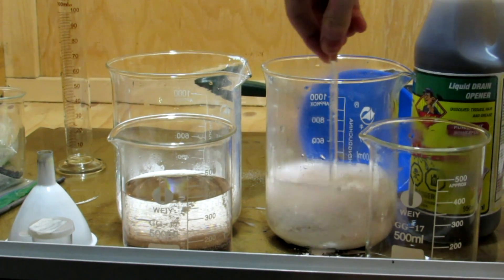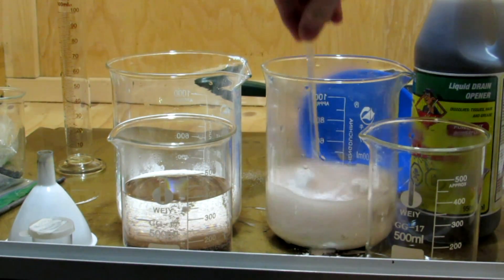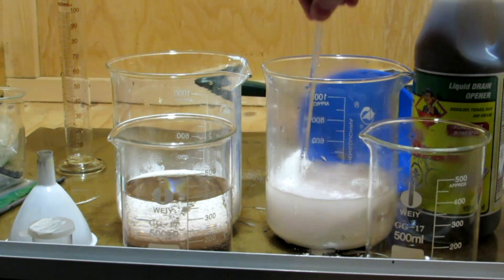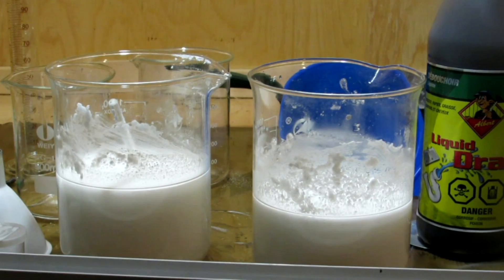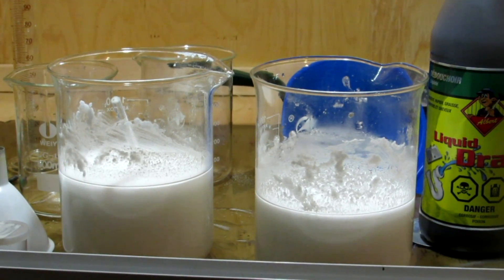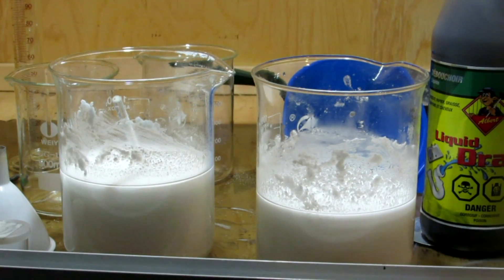In this reaction we're adding an excess of calcium phosphate, and this will just ensure that all of our sulfuric acid reacts so that the calcium sulfate will precipitate out and we can filter that off.